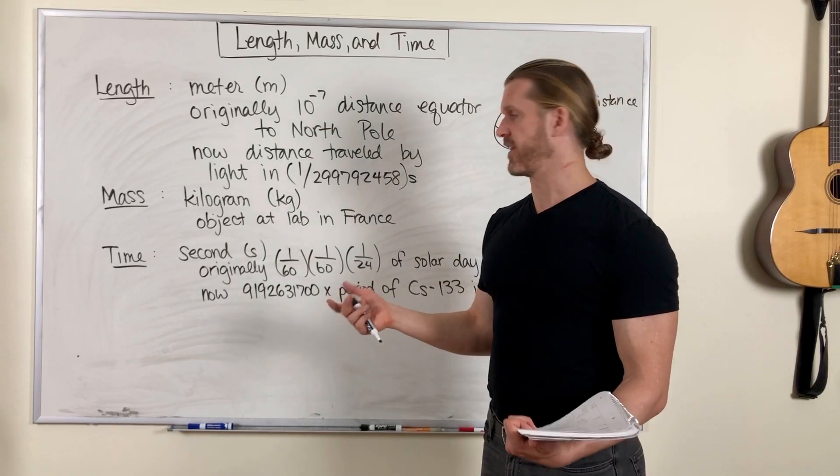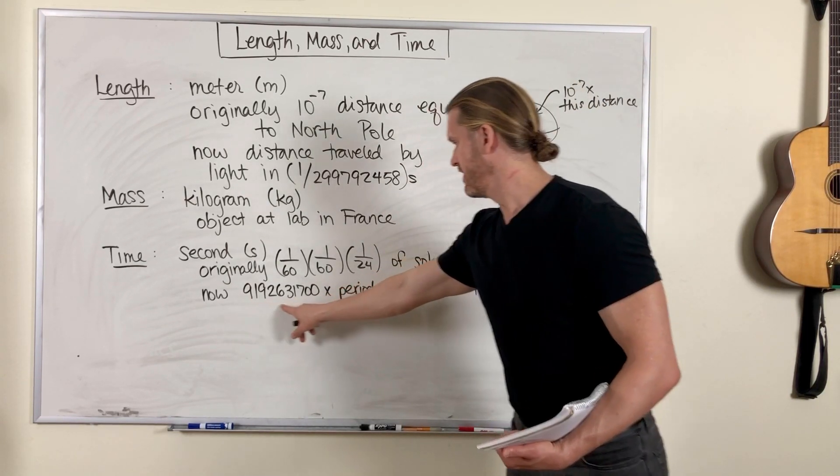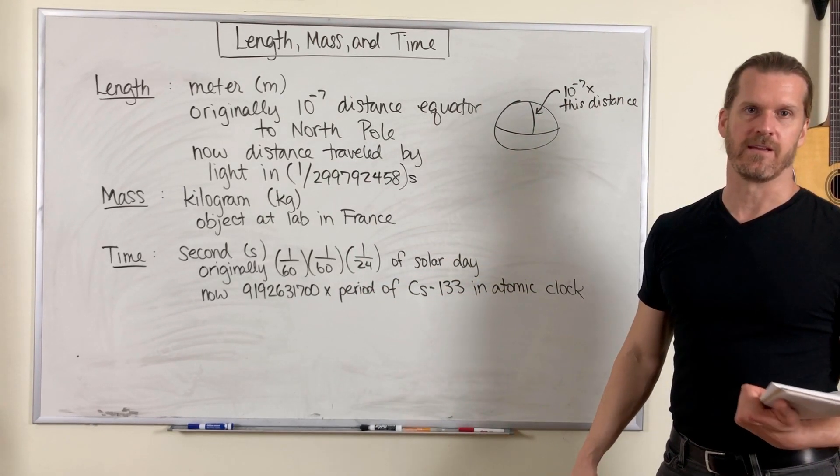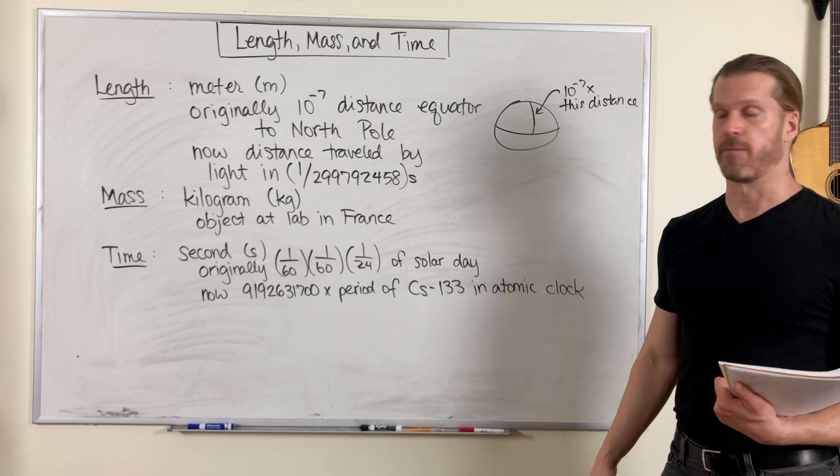So now that we have atomic clocks, we can say a second is precisely this many oscillations of a cesium-133 atom in an atomic clock.